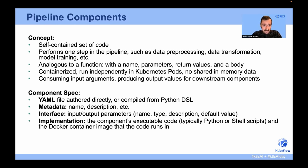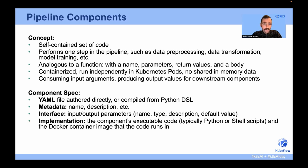The individual steps of the pipeline — the building blocks — are components. A component is a self-contained set of code that usually performs one step in a pipeline, such as data pre-processing, data transformation, or model training. It can be thought of like a function: a function has a name, parameters, return values, and a function body. Components are containerized and run independently on Kubernetes. Components have input arguments and produce output values so that they can be used by downstream components.